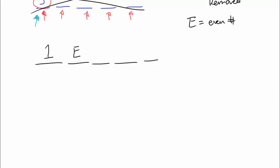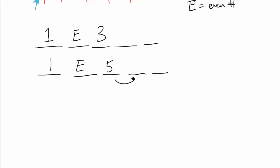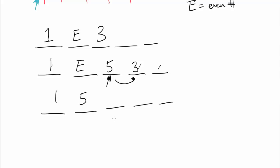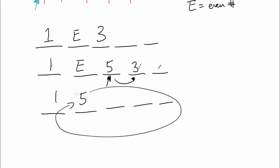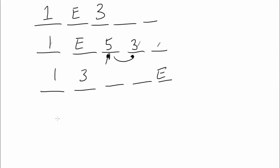Another case starting with 1: instead of placing even right after 1, we can have 3 next. Realize that if we have 5 next, that's not going to work because you get an infinite cycle of going right back to 5 infinitely many times. But 3 should work. So we can have 1, then 3, then even gets taken out, and then you have the infinite cycle of 1 and 3. So that's another way. We have now looked at all the cases starting with 1.